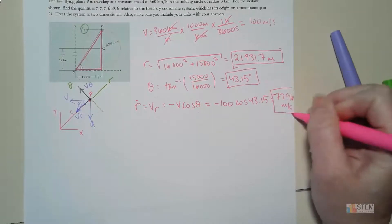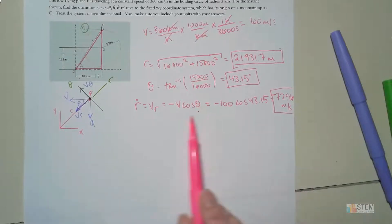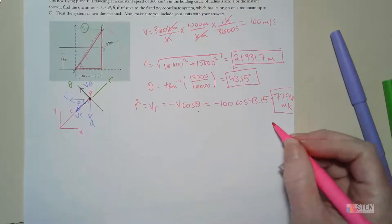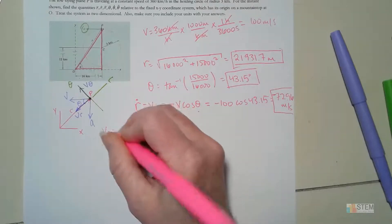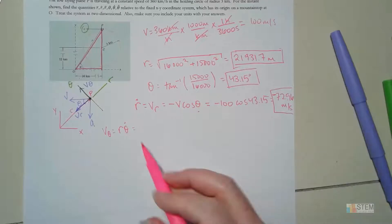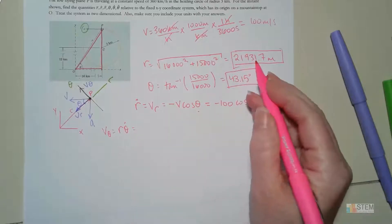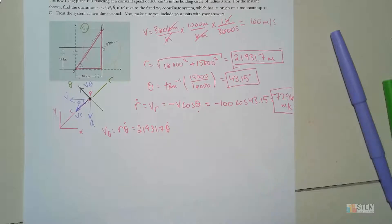Now let's look at the θ component. V_θ = r·θ̇ — that's the definition of the θ component of velocity in polar coordinates. I know r is the 21,931.7 m we just found, so we have 21,931.7 × θ̇.